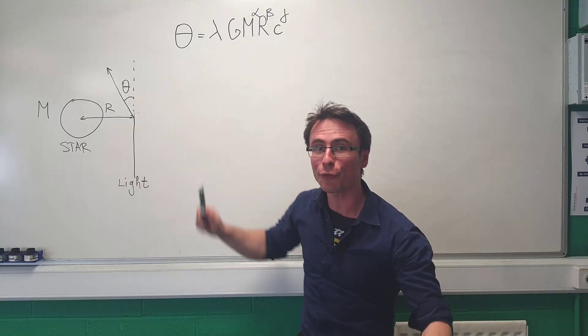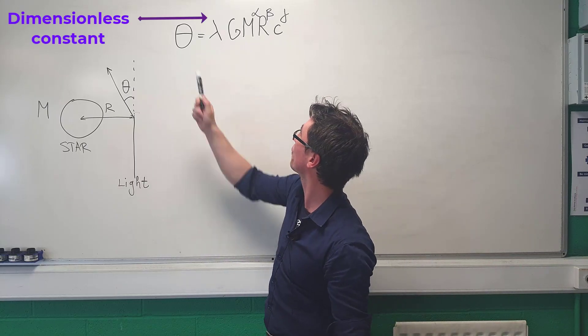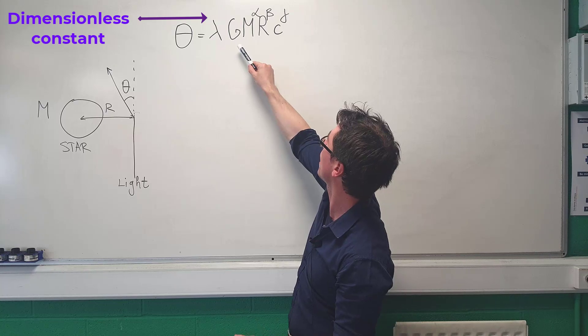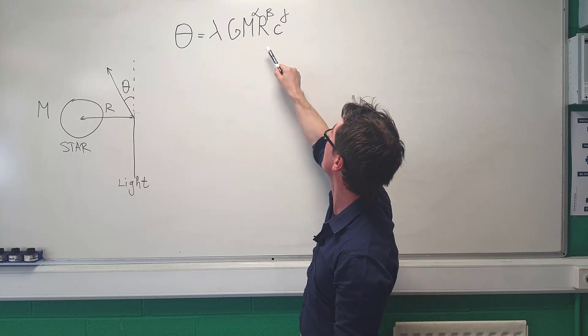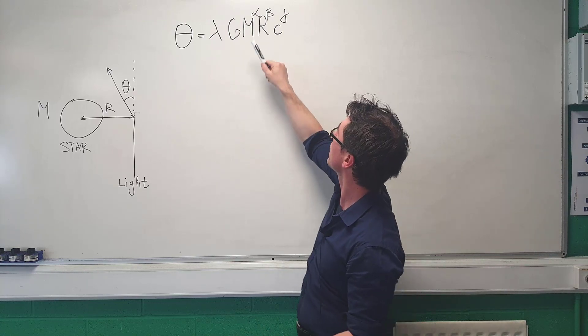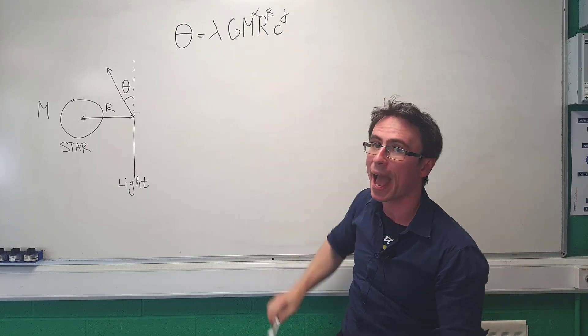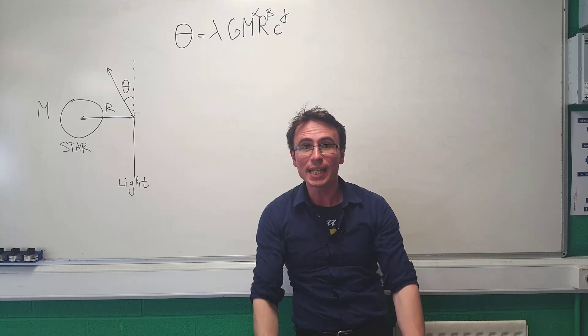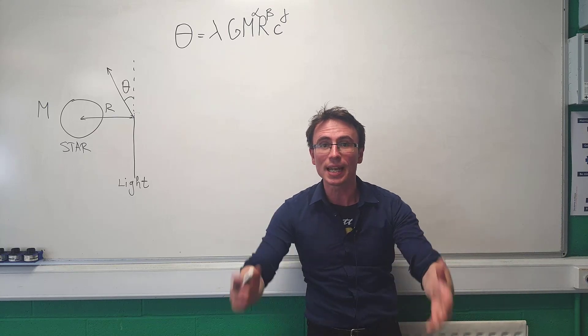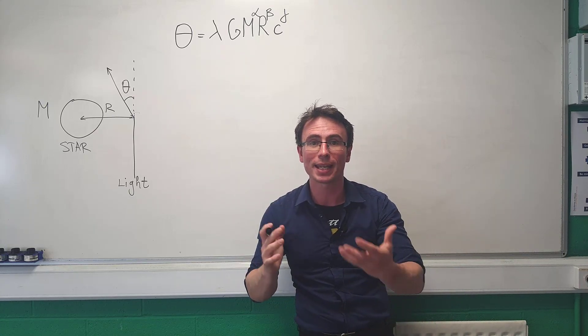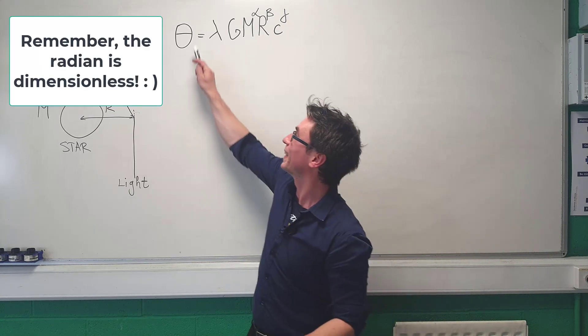We have this expression for the angle theta, which is equal to lambda multiplied by G^α · M^β · R^γ · c to some power. What we need to determine are the values of alpha, beta, and gamma.